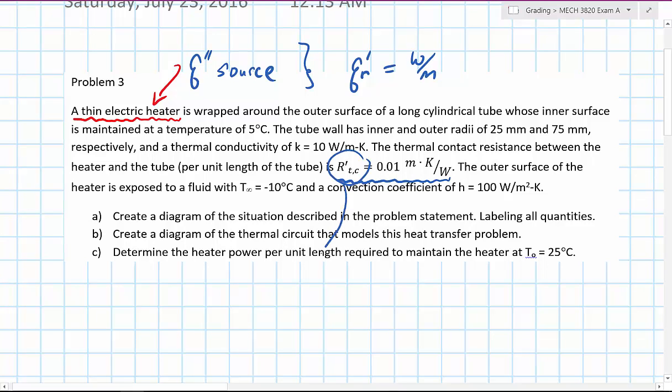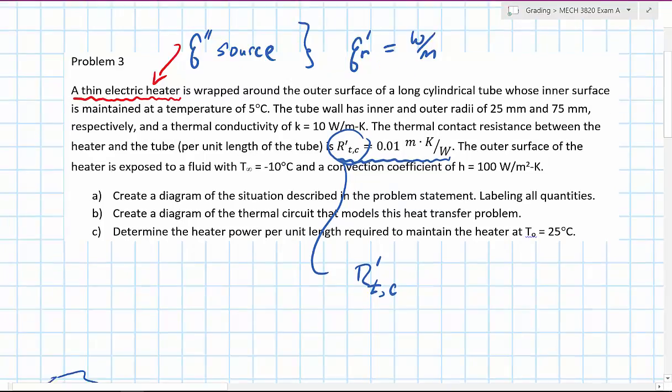So this is the text by Incropera, so R is for resistance, T is for thermal resistance, comma C for contact, and the prime gives us the fact that it's a resistance that's specified per unit length of the pipe.